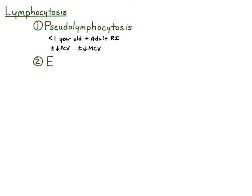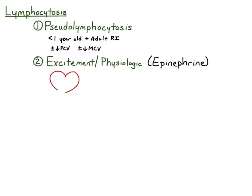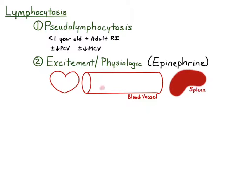The second cause of lymphocytosis is excitement or physiologic lymphocytosis, and this is due to an epinephrine release in response to a flight or fight response. To explain this lymphocytosis, I'm going to draw a heart, a blood vessel, and the spleen. Within the blood vessel, I'm going to draw a marginal pool of neutrophils and lymphocytes and a circulating pool of neutrophils and lymphocytes. Remember, the circulating pool — the ones that are not adherent to the endothelium — is the pool that's sampled during a blood draw.